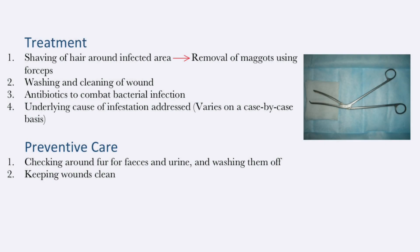The treatment of a wound myiasis typically involves the shaving of the hair around the infected area to improve visibility of the affected site. This is followed by the removal of the maggots using a pair of forceps. The wound is also typically washed and cleaned, and antibiotics are often prescribed to help combat the bacterial infection.